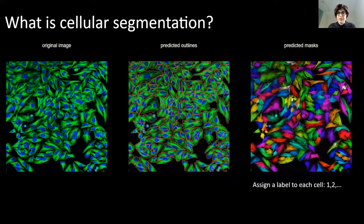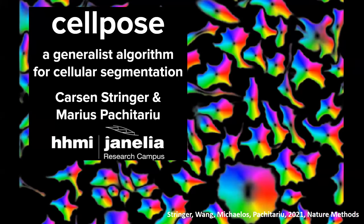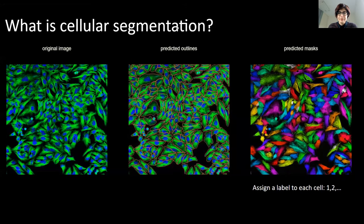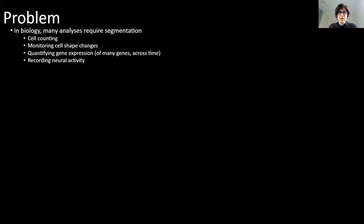CellPose is an algorithm that I and Marius Pachitariu developed to segment cells across a wide variety of imaging types and cell types. Cell segmentation means getting outlines of single cells — it's an instance segmentation problem where every instance is the same type. Accurate outlines allow you to count cells, monitor shape changes, quantify gene expression, or record neural activity.